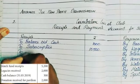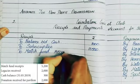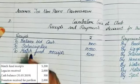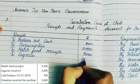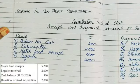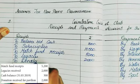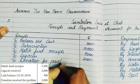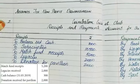Now move to the receipts side. Write 'To Match Fund Receipts' for 5,200 rupees. Next, 'To Legacies Received' for 2,000 rupees. Before writing the cash balance, also record 'To Donation Received for the Pavilion' for 2,000 rupees.